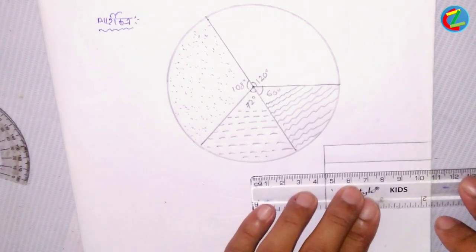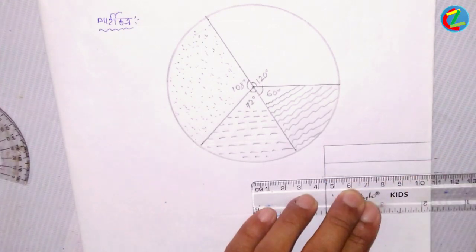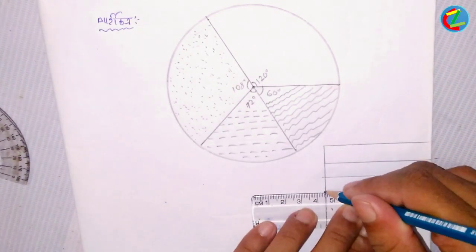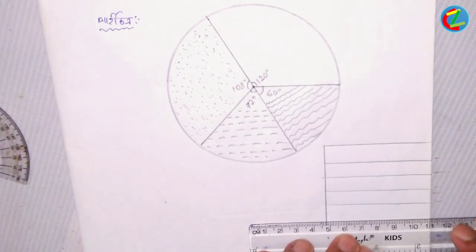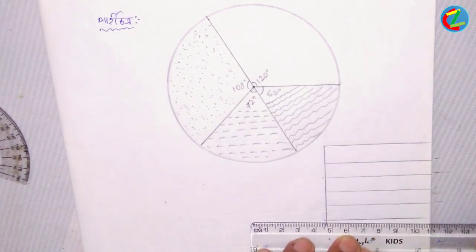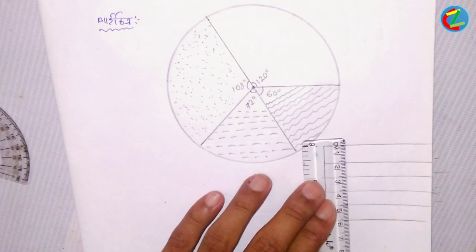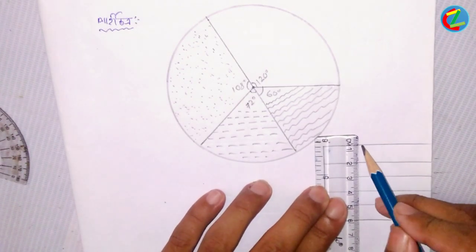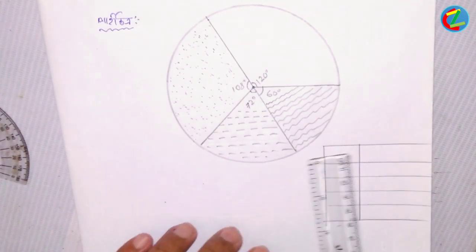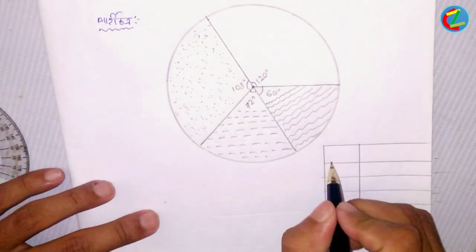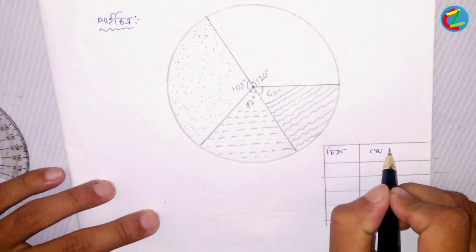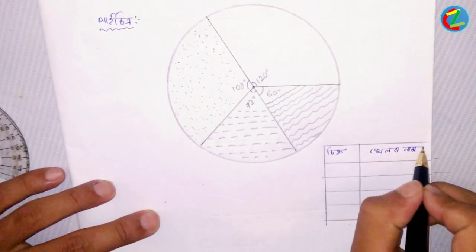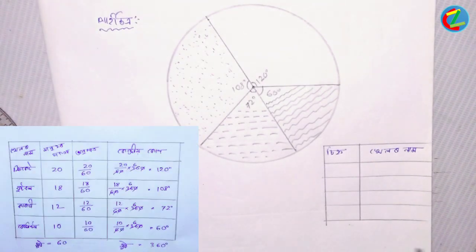This is the first section I'm drawing. The first thing is to mark the degrees properly. Now I'll draw each section of the pie chart according to the calculated degrees.